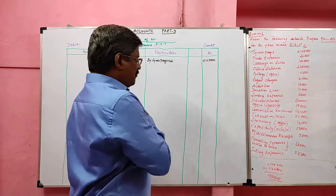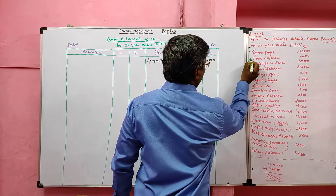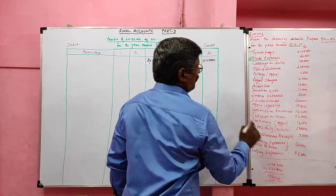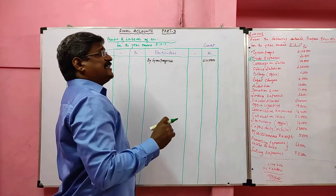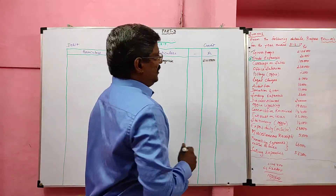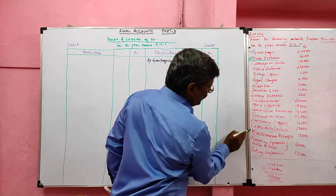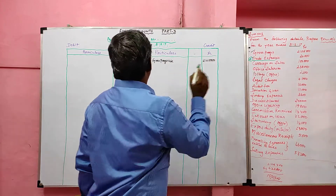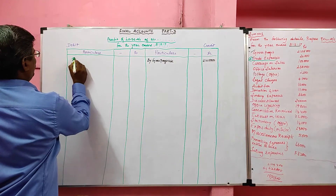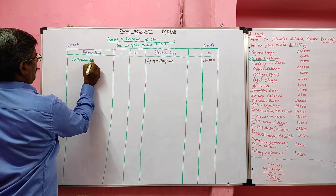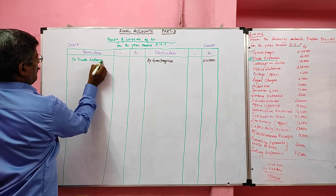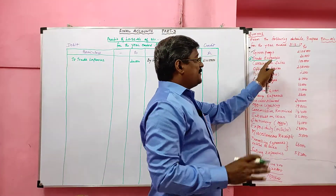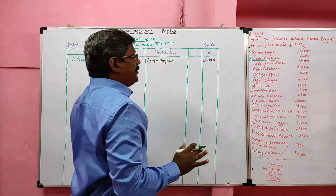The next very important item is trade expenses. When trade expenses are given, you have to read the entire problem and check whether office expenses are given or not. In this problem, trade expenses are given without any office expenses, so it should be debited to the profit and loss account. The value is 20,000 rupees.